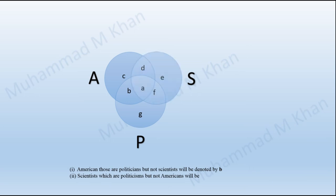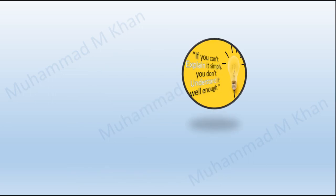Similarly, scientists are represented by S and politicians by circle P. The intersection of these two circles is represented by areas A and F. We have to exclude Americans from the highlighted area — since Americans are represented by circle A, excluding the area of circle A from the highlighted area, we are left with the area denoted by letter F. So scientists who are politicians but not Americans are denoted by F. That was the required solution of part C.